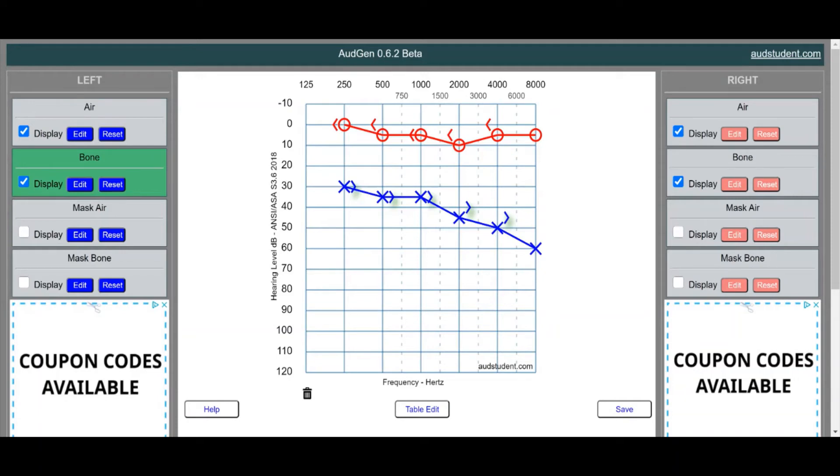We now need to look to see if we need to mask. Now remember, to figure out if we need to mask, you take the interaural attenuation plus the bone conduction threshold of the non-tested ear and add those together. So, we have supraoral headphones. So our interaural attenuation is going to be 40 decibels.